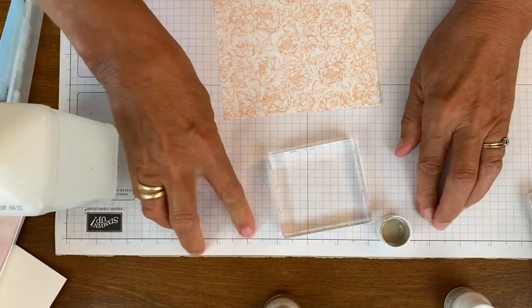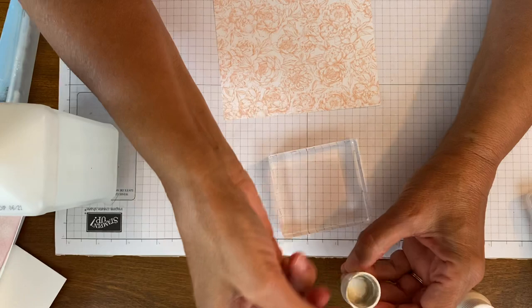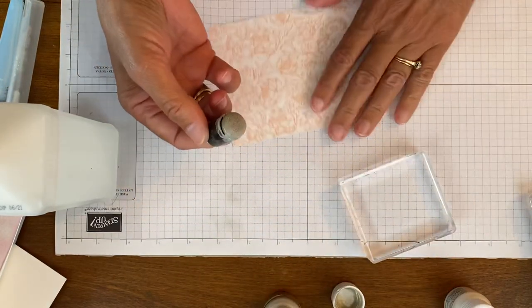I can use my sponge dauber. I often use it right in the cover like this. But you can see I'm going to have to keep taking more.